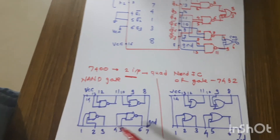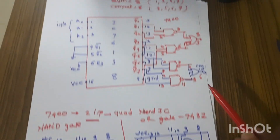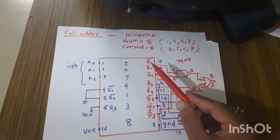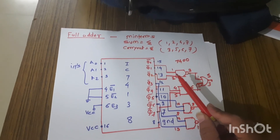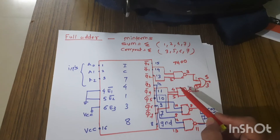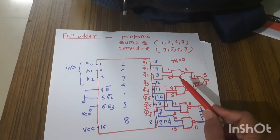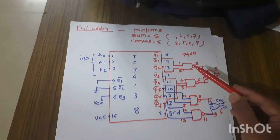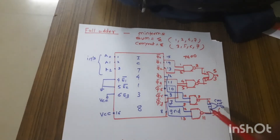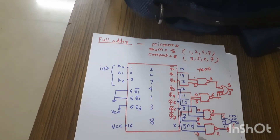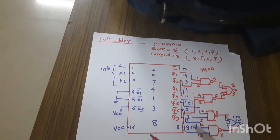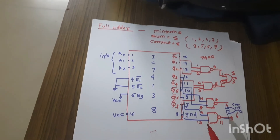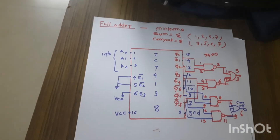The output pins of IC 74138 (pins 15 to 7) are active low, which is why the min terms for sum are connected to the OR gate through NAND gates. We have used four NAND gates and two OR gates in total. I hope you understood how to implement the full adder circuit using IC 74138, why NAND gates are used, and all the pin configurations. Thank you.